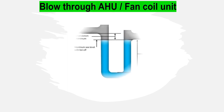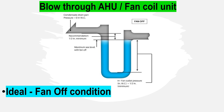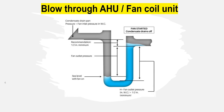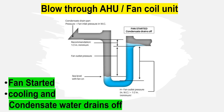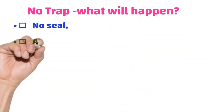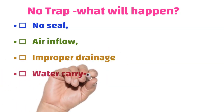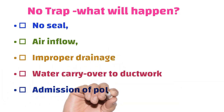For the blow-through unit at the ideal fan-off condition, both sides of the trap contain the same level of water before the fan starts and condensation begins. When cooling and condensation begin, the water starts to drain off due to positive pressure on the fan coil side, and the water is easily pushed down to drain.